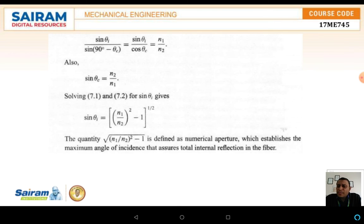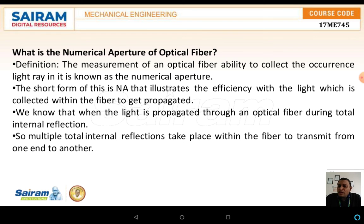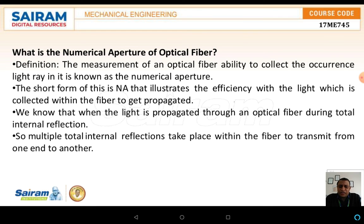The numerical aperture of the optical fiber is derived as: NA = √(n1² − n2²). As per the definition, the numerical aperture is the measurement of the optical fiber's ability to collect incident light rays — it illustrates the efficiency with which light is collected within the fiber and propagated. When light is propagated through the optical fiber, multiple total internal reflections take place within the fiber to transmit light from one end to the other.